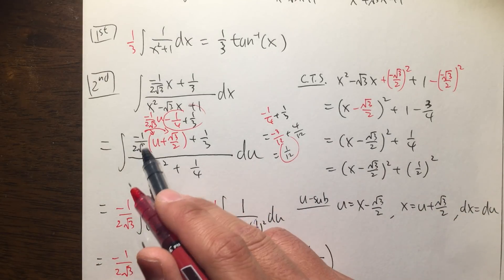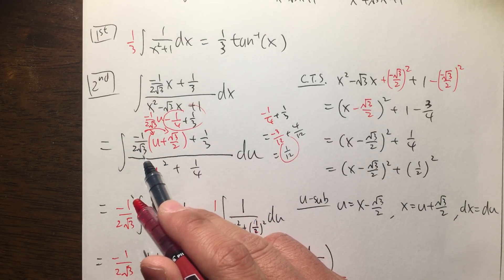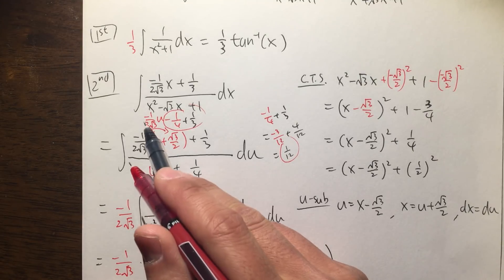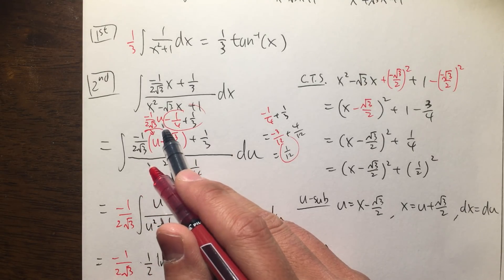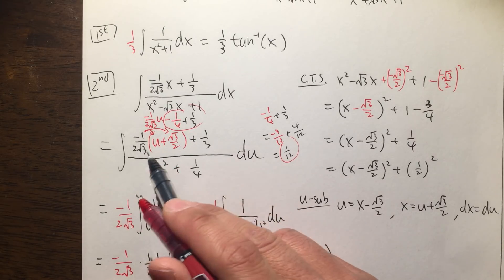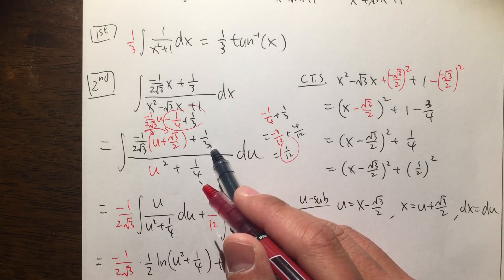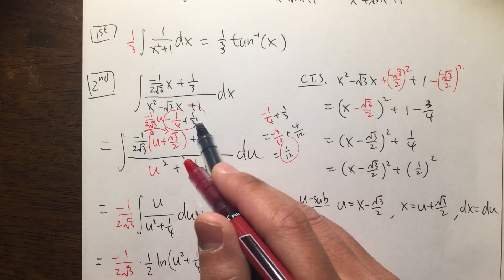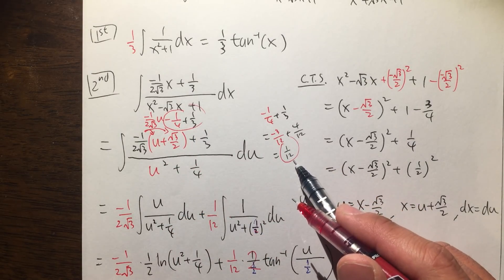On the top, you distribute the negative 1 over 2 square root of 3 to here and here, and you get negative 1 over 2 square root of 3, u, and then this times that is negative 1 over 4. And then you still have to add 1 third to that. Negative 1 over 4 plus 1 third is 1 over 12.